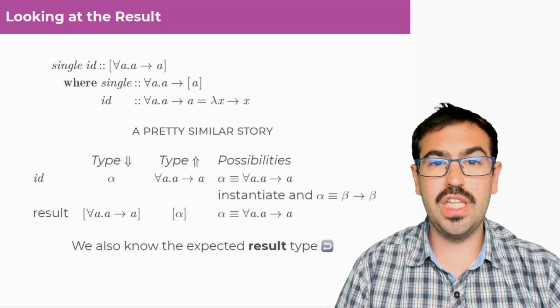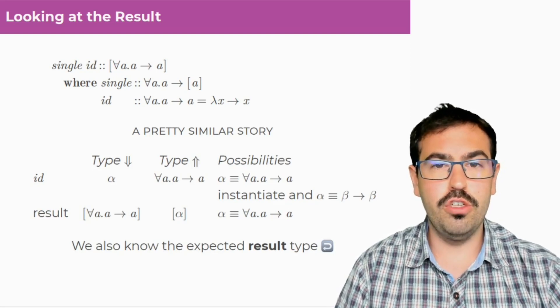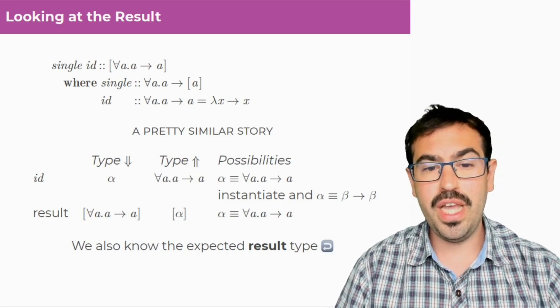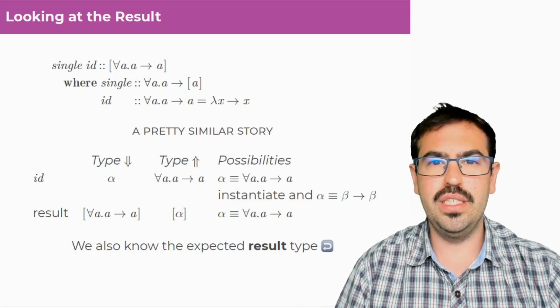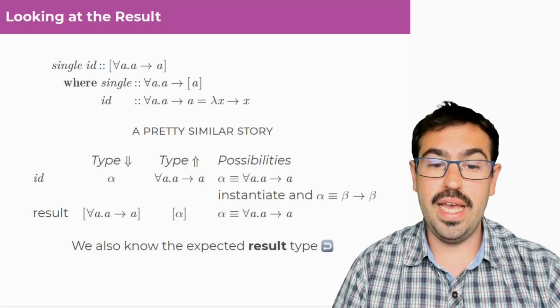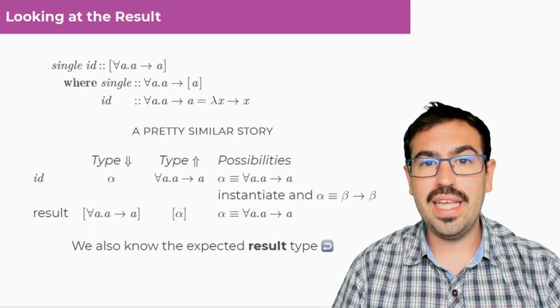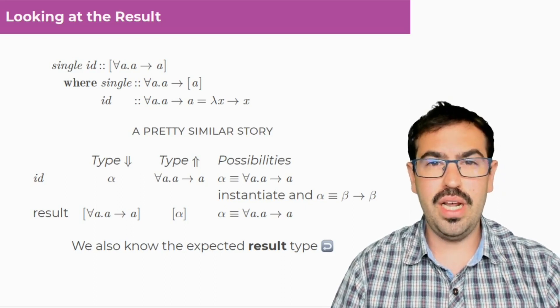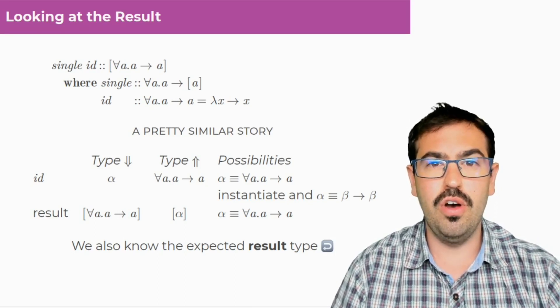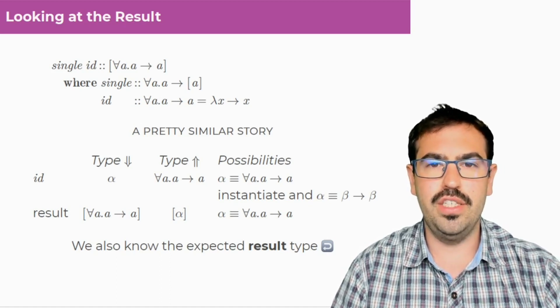But if we have a better look, we can also take into consideration the type of the result. And in that case, we can play the same trick as we did for the cons of ID with IDs. The type we get pushed is for all A dot A to A from the annotation, and the type we get from the instantiation is list of alpha. So we can make alpha equal to for all A dot A to A. So by knowing the expected result type, we can get even more impredicative information. And this will actually inform us to get a bidirectional type system instead of a single directional one as Hindley-Milner is, for example.